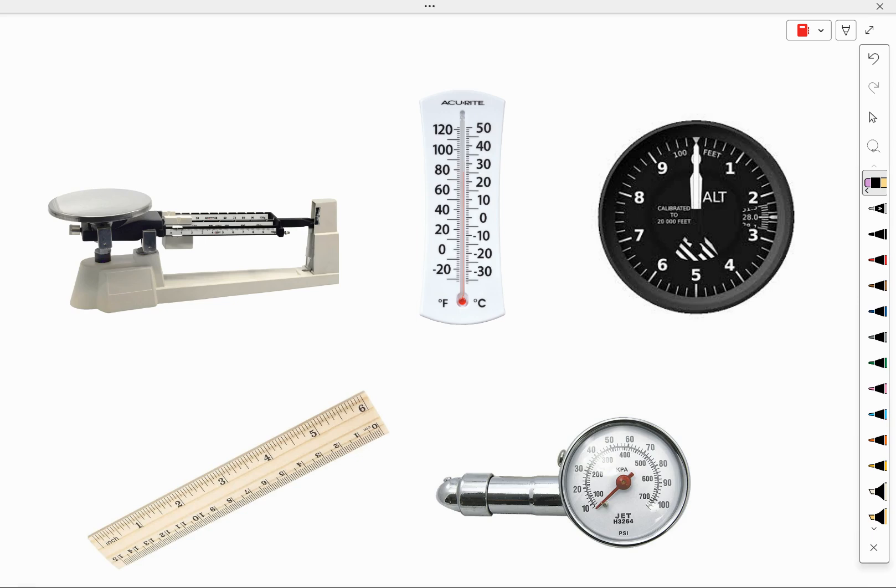The first one is a balance used to measure the mass of objects in grams. It's got three sliders on it, so it's called a triple beam balance. This next object here, that's a thermometer as well, measuring in degrees Fahrenheit and degrees Celsius.